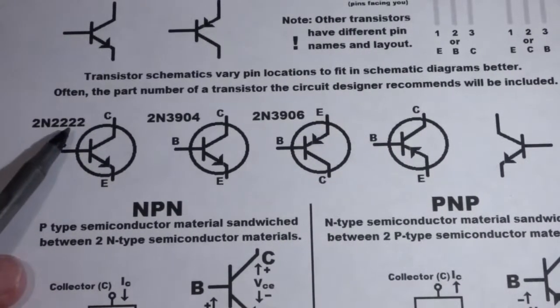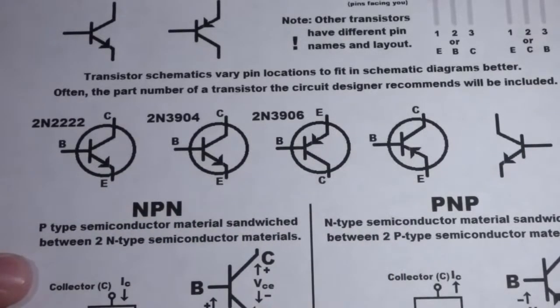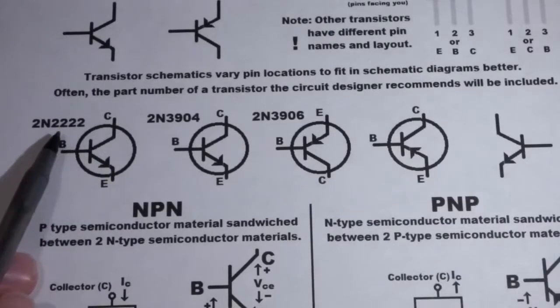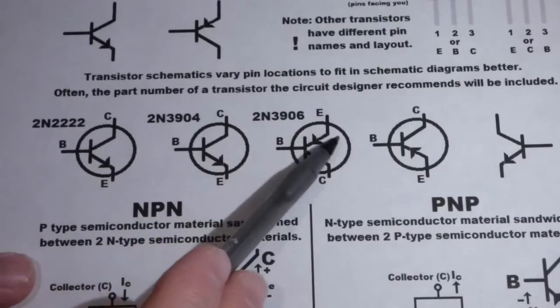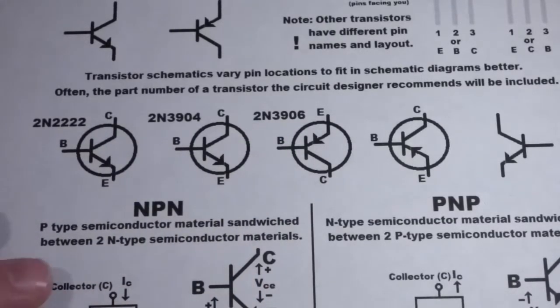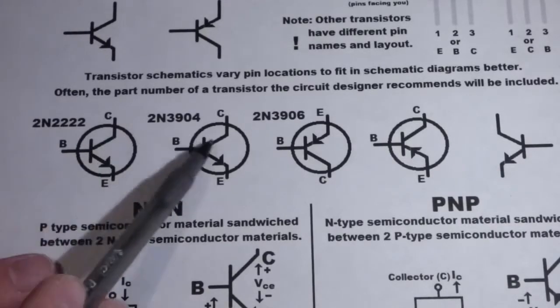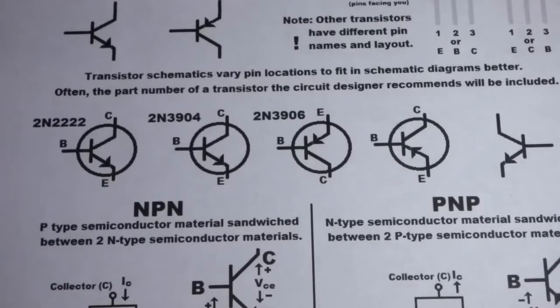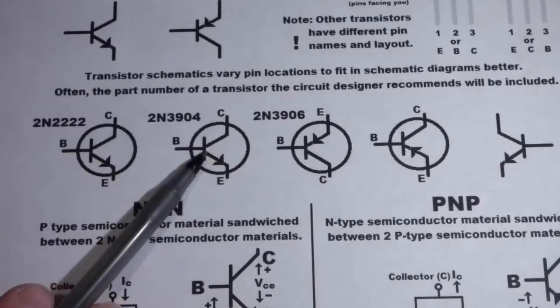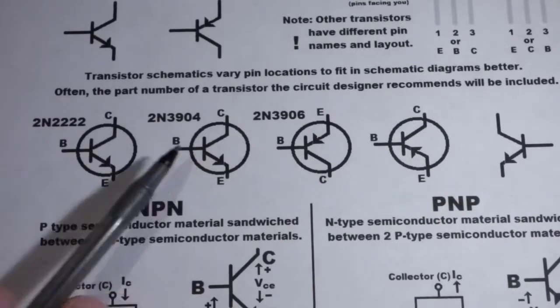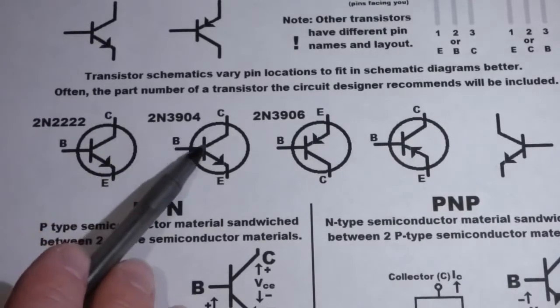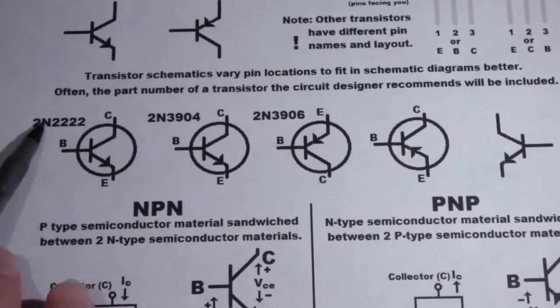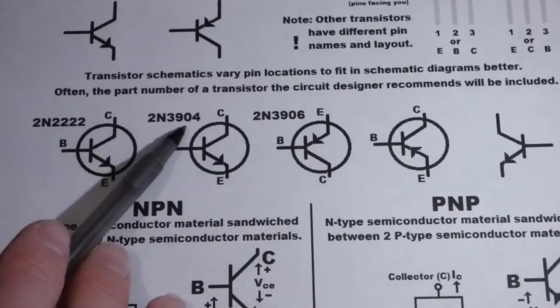Now, as promised, we come to the schematic diagrams. These are different variations. As you can see here, we have the part number for the first three. You notice the schematic diagram is exactly the same for these first two, but the part number is different. Ideally, when you're looking at a schematic drawing and you're putting together the circuit, the transistor schematic symbol will have the part number there and you will have that part.